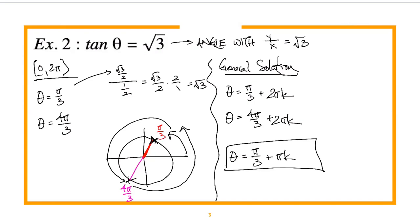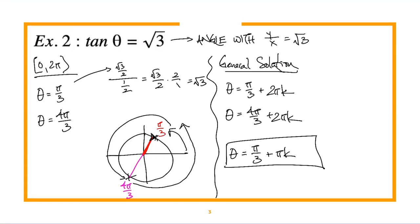Remember: for tangent, you only add πk because it repeats every π. For sine and cosine, the period is 2π, so you add 2πk. Any questions about example two?